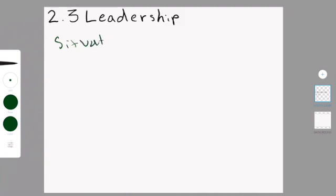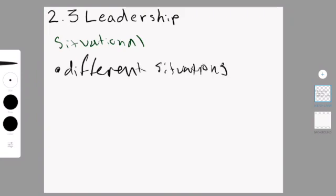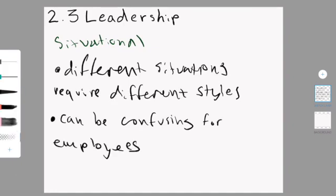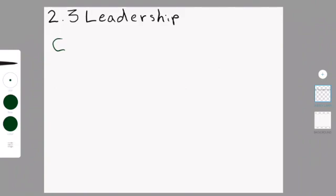Now, on to the last style. This is the situational type of leadership style. Now, I won't say too much about this because it's quite obvious what it is. Basically, different situations require different styles. Obviously, this is good because you are adapting to the situation. However, this can be confusing for employees if you change too often because then it's unclear how much freedom they can take and what part they have in the business. Can they make decisions? Can't they?